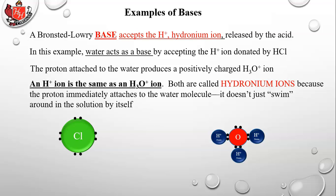An H+ ion is the same as an H3O+ ion — both are called hydronium ions — because the proton immediately attaches to the water molecule. You can think of the water molecule as being right next to the hydrochloric acid, not across the beaker, so that proton just slightly moves over to the water molecule.